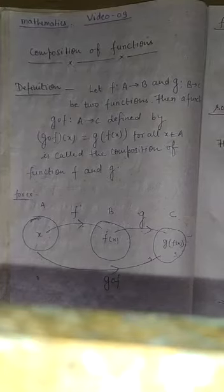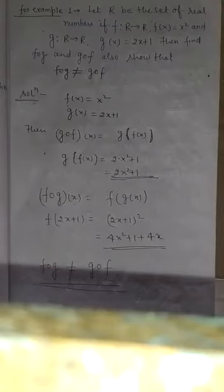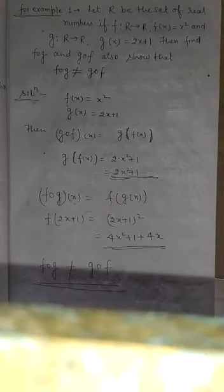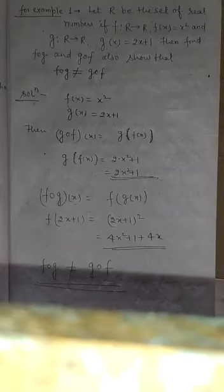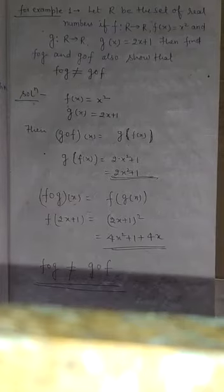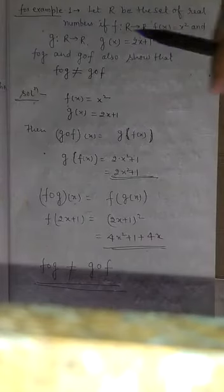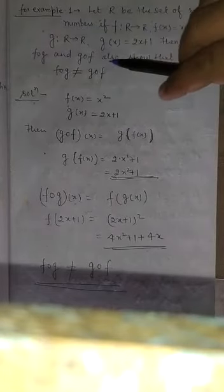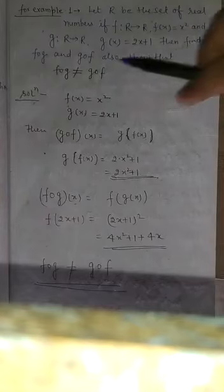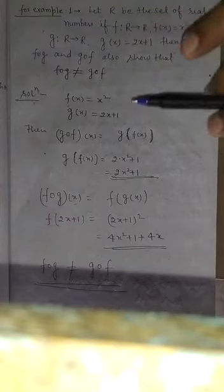For example, let R be the set of real numbers. If function f: R to R where f(x) = x² and g: R to R where g(x) = 2x + 1, then find f∘g and g∘f. Also show that f∘g ≠ g∘f. Solution: